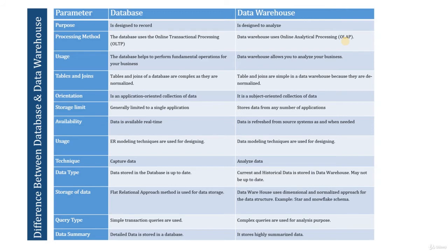The next parameter is technique. In database, the technique essentially involves capturing of data. In data warehouse, it is basically the analyzing of data. Database is used for capturing and storing data for future use, while in data warehouse, historic data is stored and used for analysis purposes.